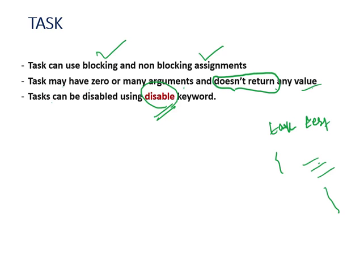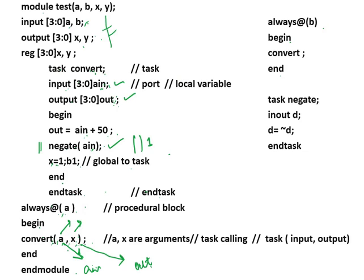This demonstrates tasks with different argument counts: the task 'negative' has one argument, the task 'convert' called from the first procedural block has two arguments, and in the second procedural block 'convert' is called with zero arguments — no parentheses included.